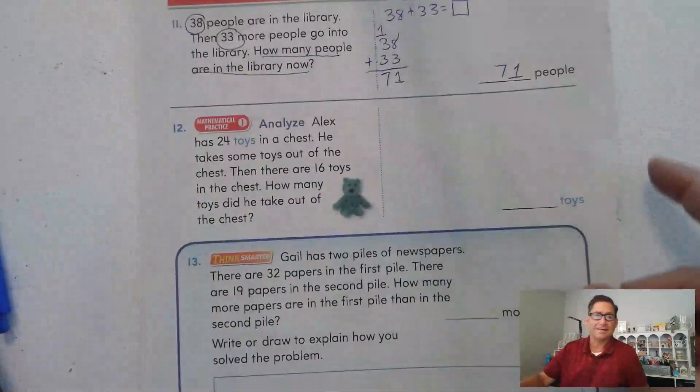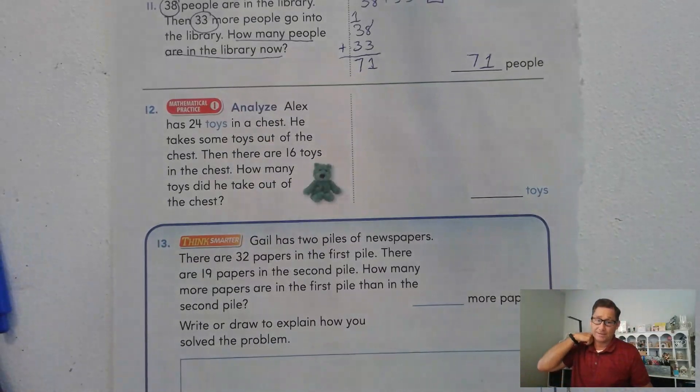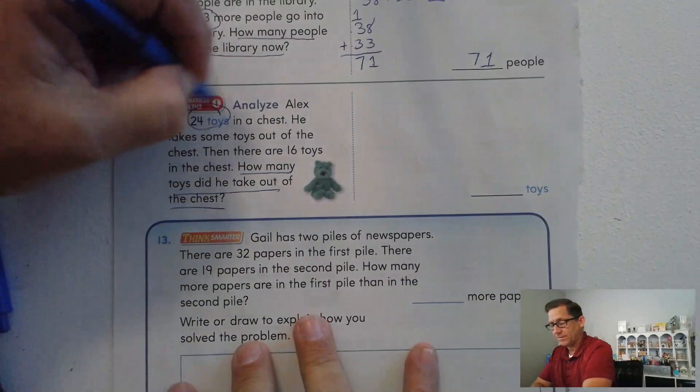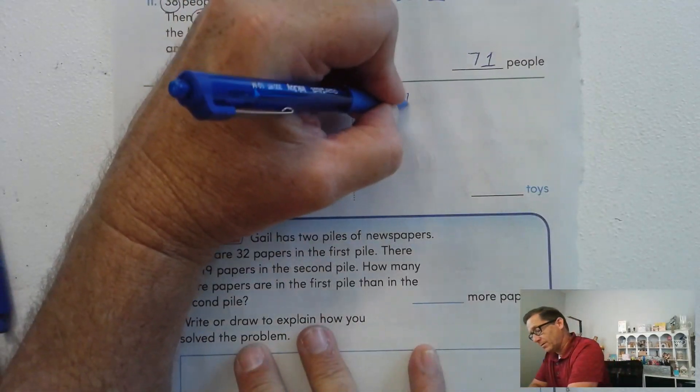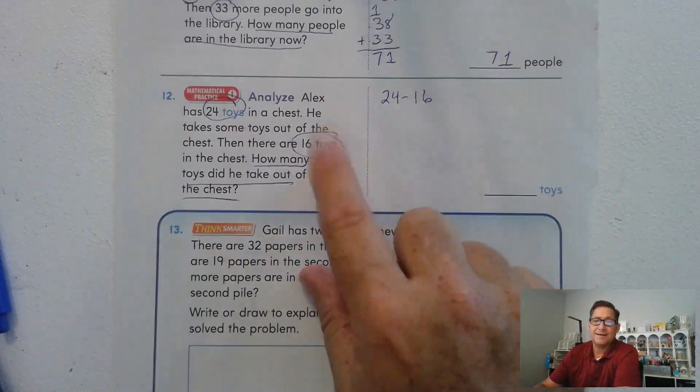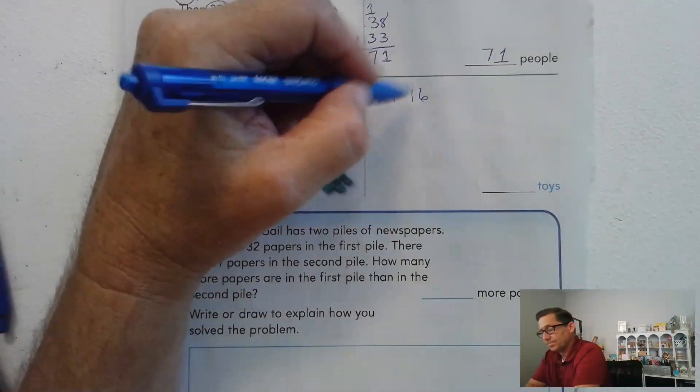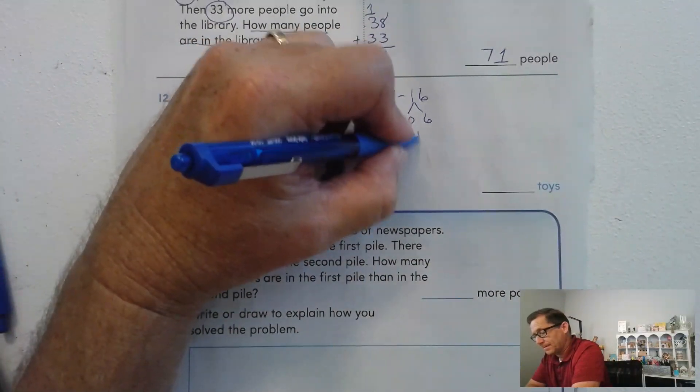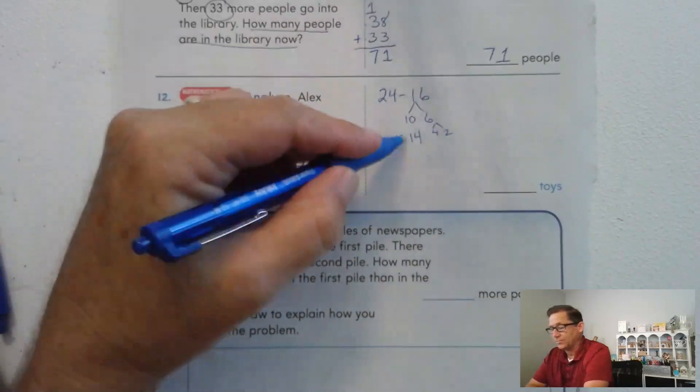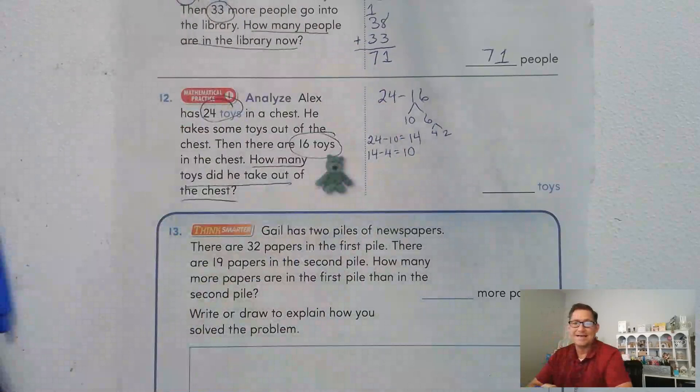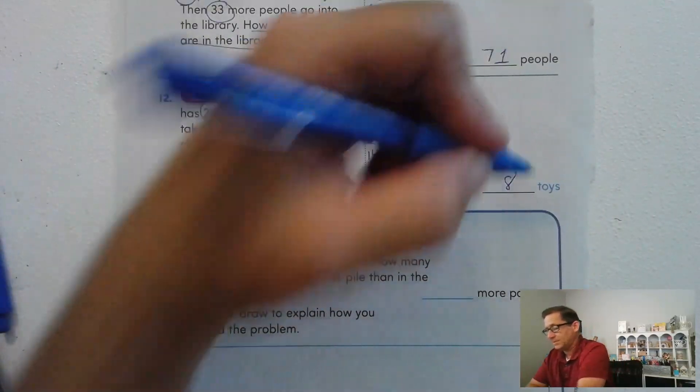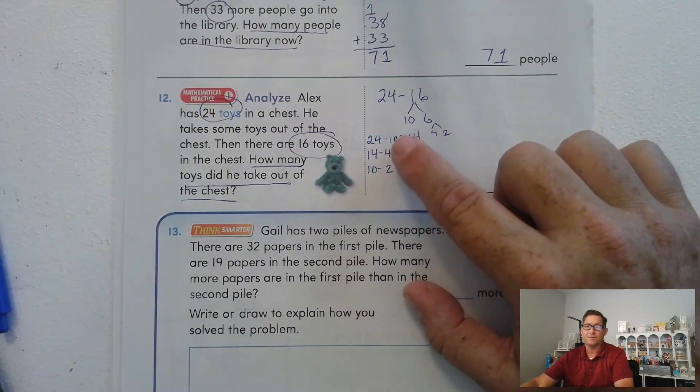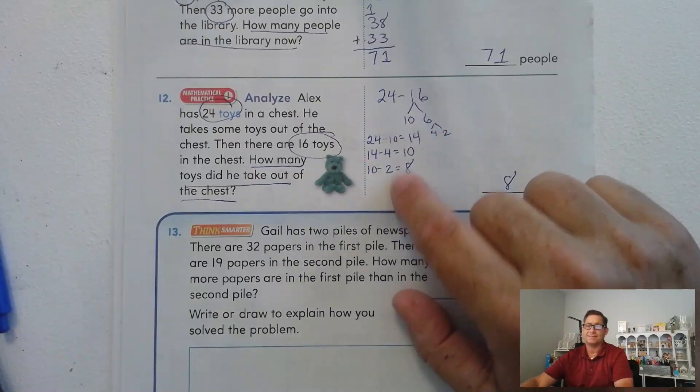Number 12. Alex has 24 toys in a chest. He takes some toys out of the chest. Then there are 16 toys in the chest. How many toys did he take out of the chest? So he had 24. And now there are 16. 24 minus 16. If we subtract the 16 that are in the chest, that'll tell us how many he took out. I want to break 16 into 10 and 6 to start. 24 minus 10 is 14. Now I want to break 6 into 4 and 2 because 14 minus 4 makes it a 10. And 10 minus 2 is 8. So he took out 8 toys. We subtracted 10, 4, and 2. 10 plus 4 is 14, plus 2 is 16. So we subtracted 16. We just did it in 3 steps.